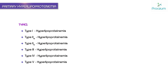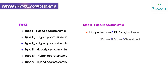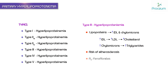In type 3 hyperlipoproteinemia, the lipoproteins increased are intermediate density lipoprotein (IDL) and chylomicrons. IDL increases cholesterol, and chylomicrons transport triglycerides, so both triglycerides and cholesterol are increased. There is a risk of atherosclerosis and the treatment given is phenofibrates.